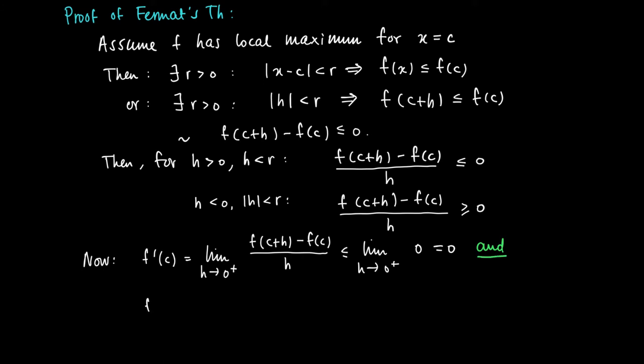But also, if we approach h from the left-hand side to 0, so if we take the limit from h to 0 minus of f(c+h) minus f(c) divided by h, then since we divide by a negative h, we concluded already that the fraction is larger or equal than 0, so the limit is also larger or equal than 0.